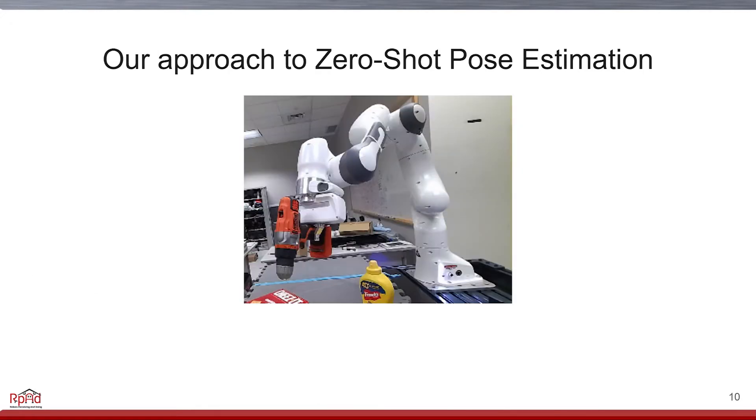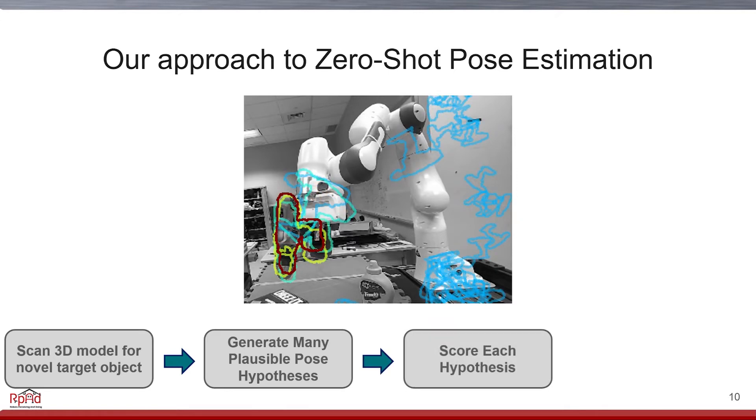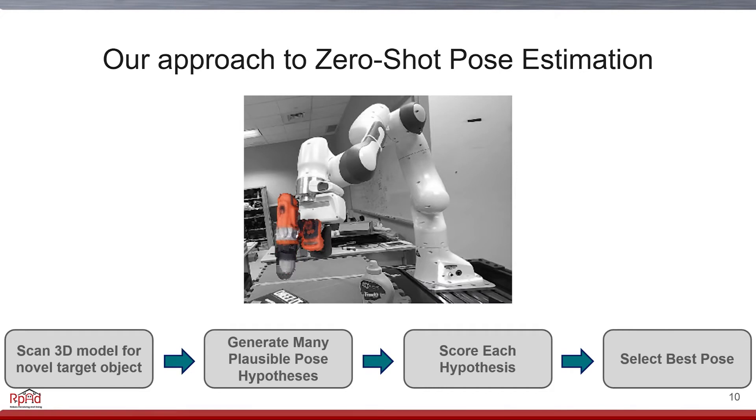Our approach to the zero-shot pose estimation problem is as follows. First, we obtain a point-cloud model of the object to localize. Then, using the observation, we find many possible pose hypotheses, score each of them according to its fitness, and select the best pose to be used in a downstream task. The primary focus of this work is on how to accurately score these hypotheses.